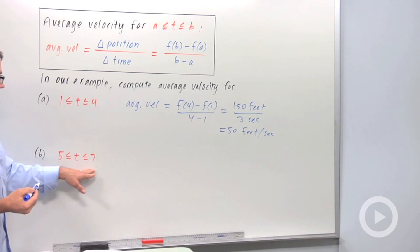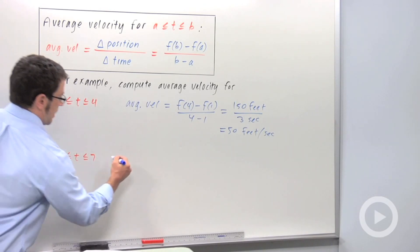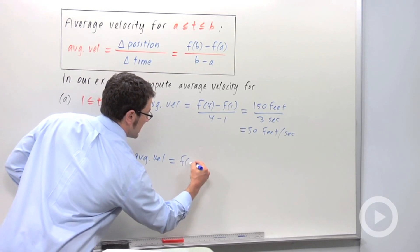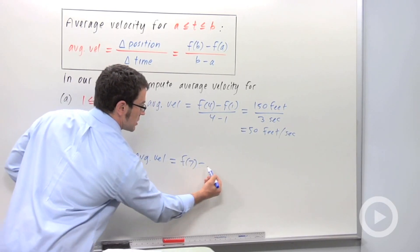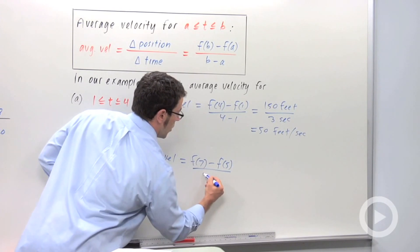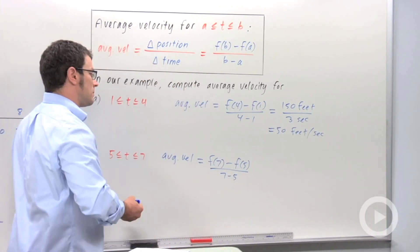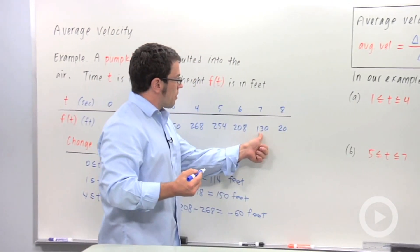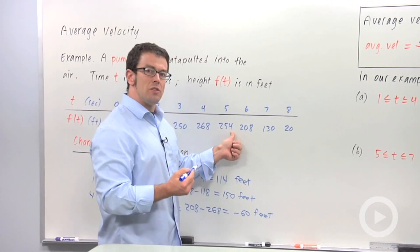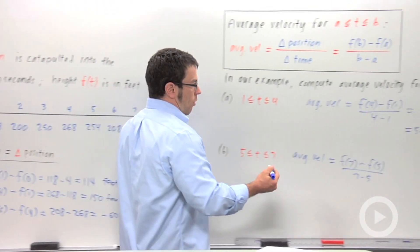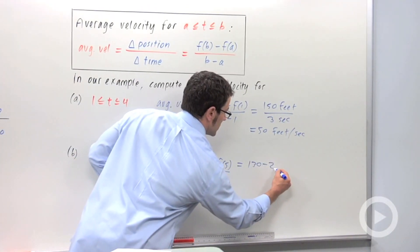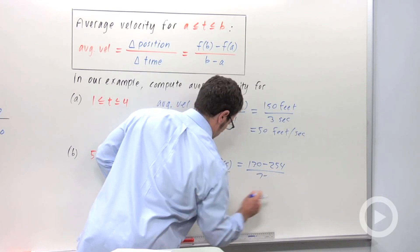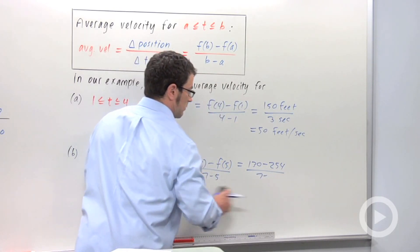Okay, and then how about on the interval from 5 to 7? Average velocity is f of 7. Remember, final position minus initial, minus f of 5, over 7 minus 5. f of 7, going back to the table, is 130. f of 5, 254. So we have 130 minus 254 over 2. 7 minus 5 is 2.